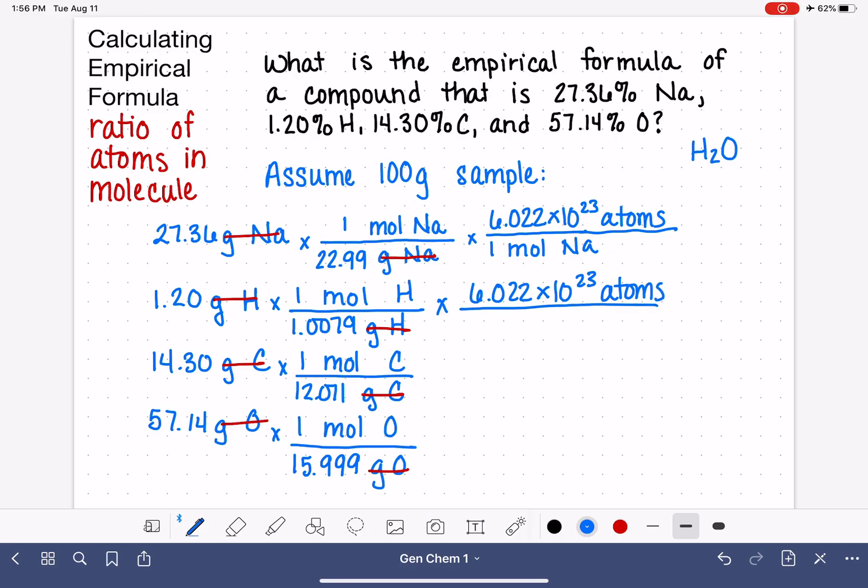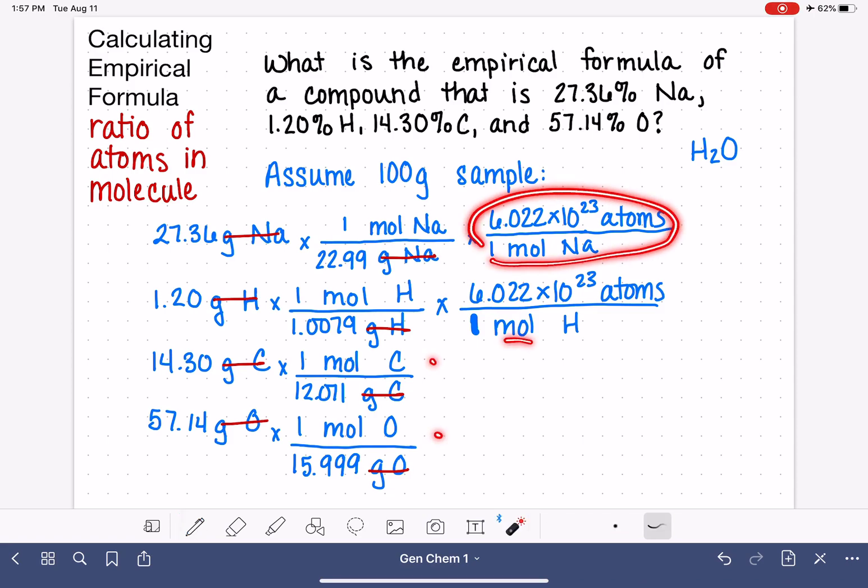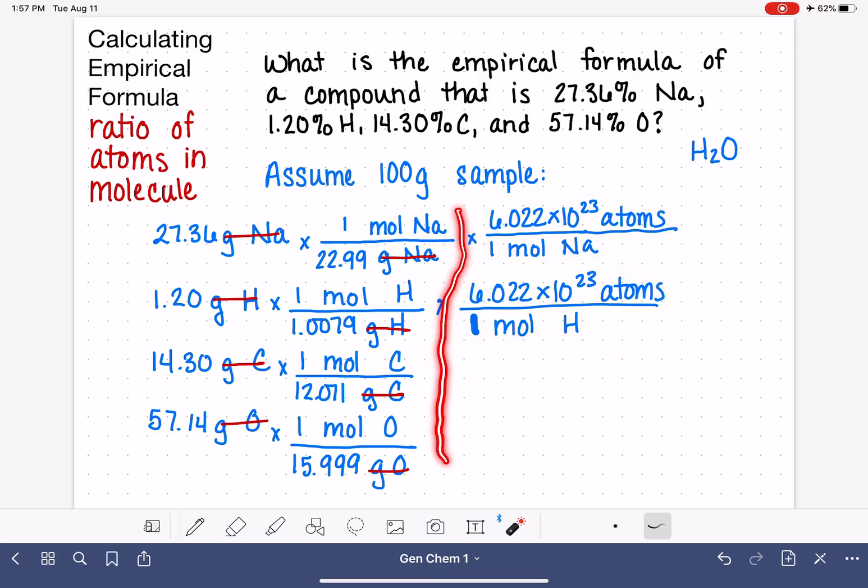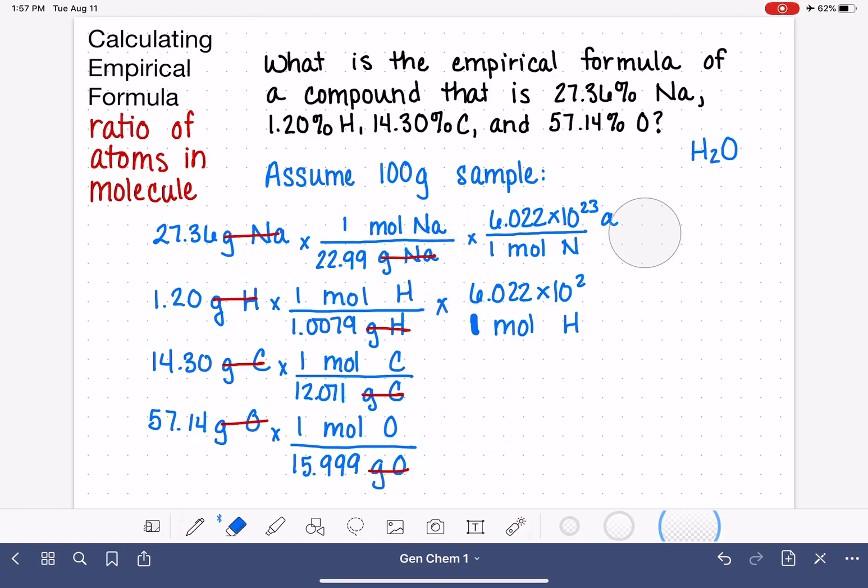For every single one of these four elements, sodium, hydrogen, carbon, and oxygen, for every single one of them, this step is going to be exactly the same. So for all of these, as we go down, we're going to be multiplying all of them by Avogadro's number every single time. So we're going to do the exact same mathematical operation to every single one of these. And that means it's actually not necessary to do that. We're going to be doing the same math to all of them. So to save ourselves some time, we're just not even going to do that last step.